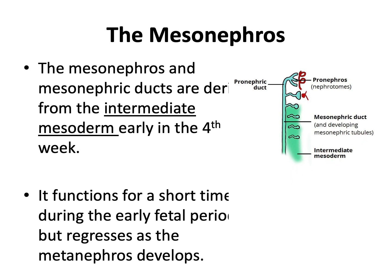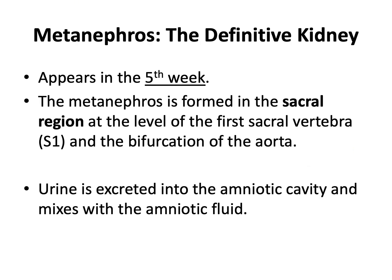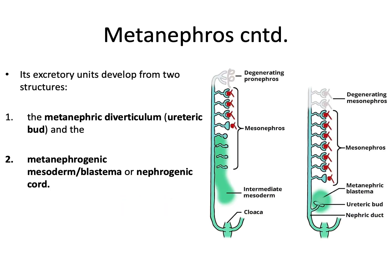The metanephros will appear in the fifth week. It is formed in the sacral region at the level of the first sacral vertebra S1, at the point of bifurcation of the aorta. Urine is excreted into the amniotic cavity and mixes with the amniotic fluid. The metanephros is a special unit developed from two structures: the metanephric diverticulum — also known as the ureteric bud — and the metanephrogenic blastema or mesoderm, derived from the caudal part of the nephrogenic cord.